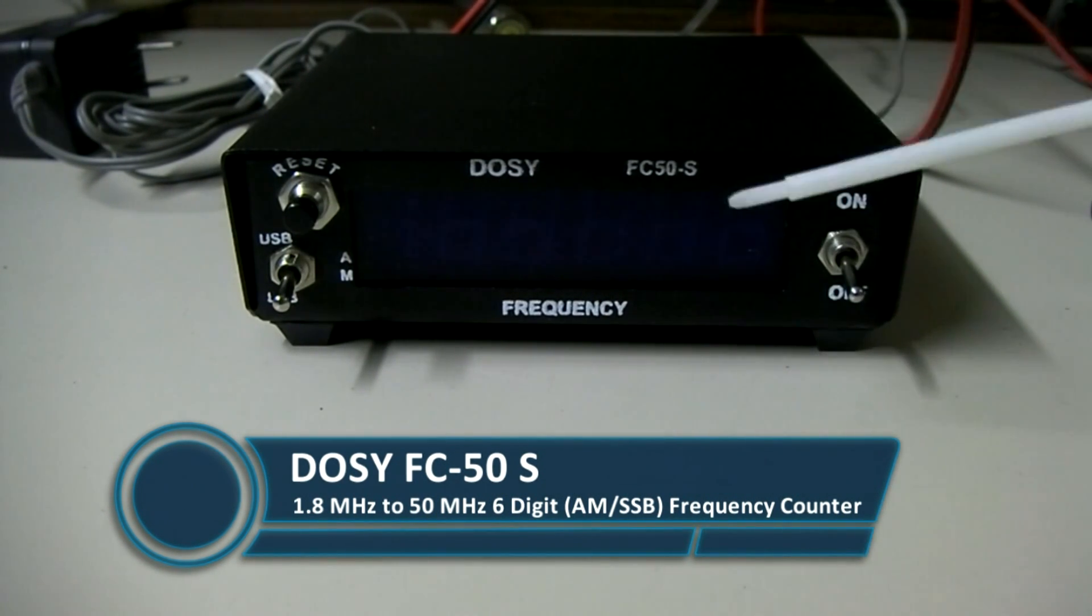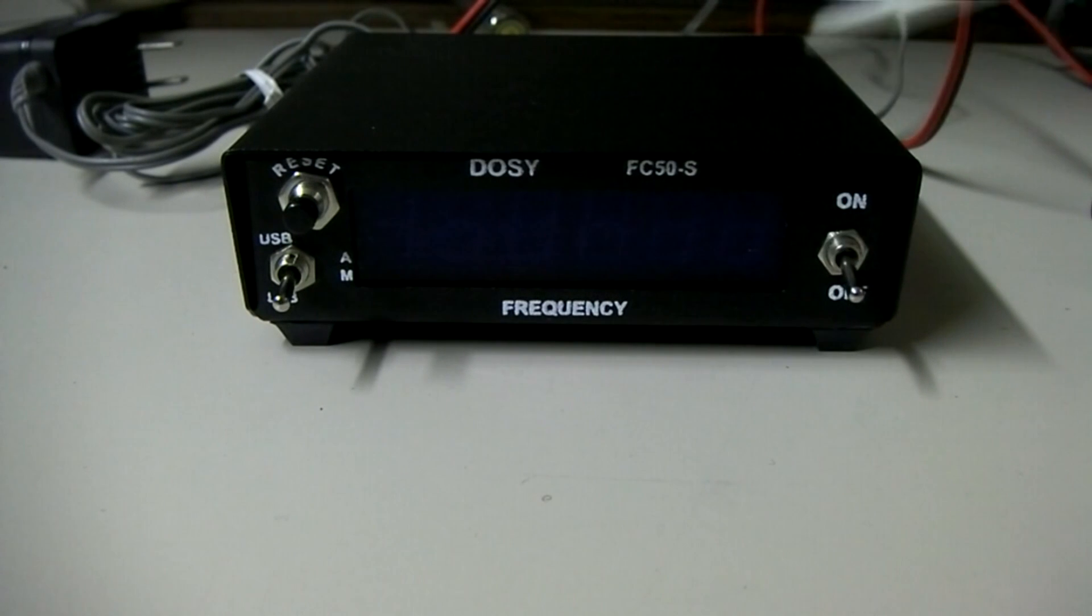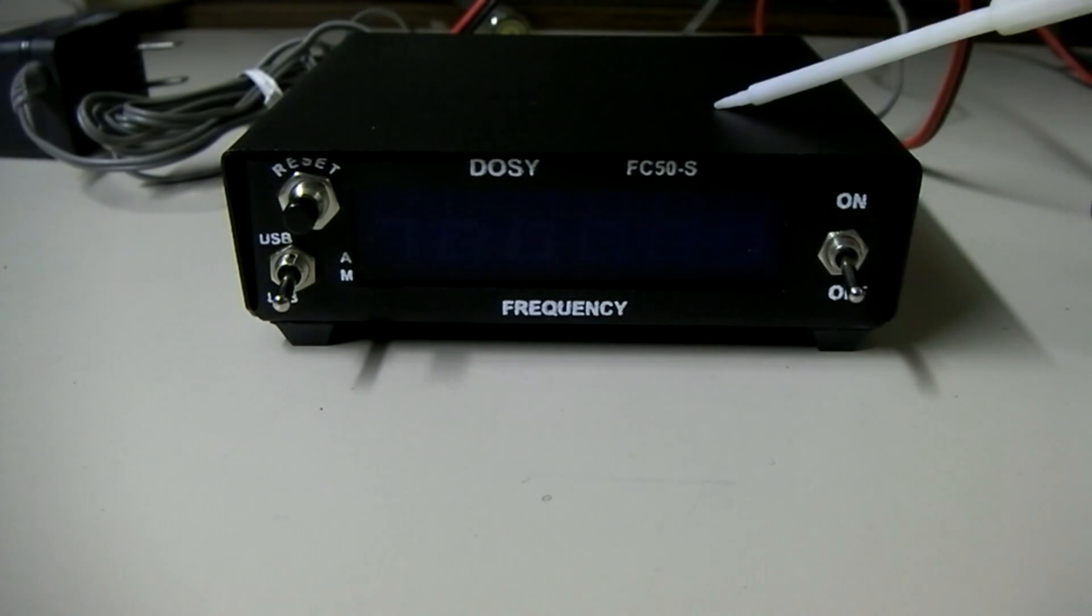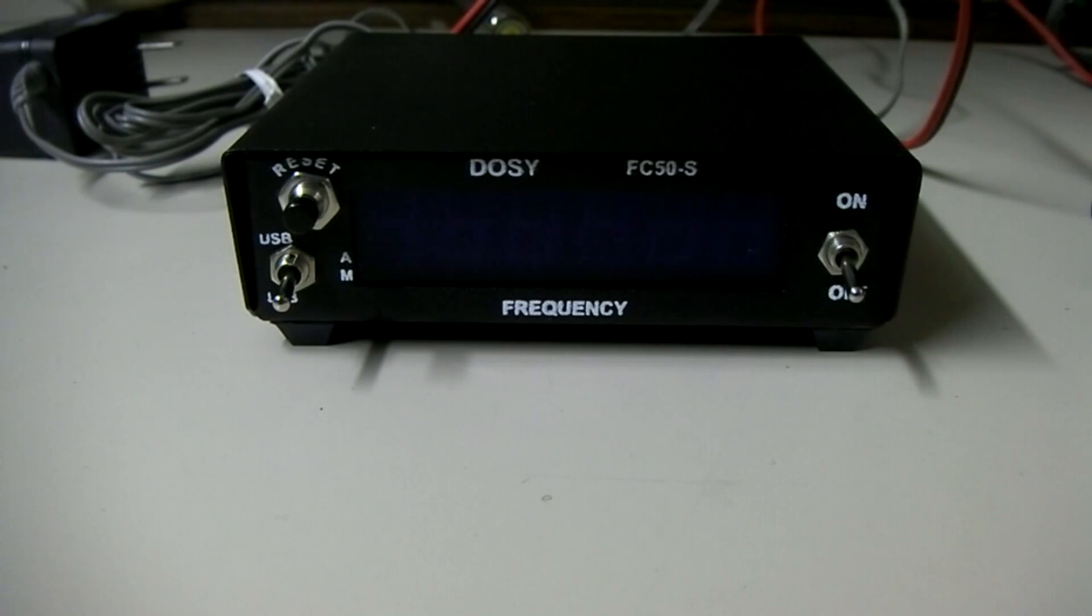This is the FC50S. This is one that can actually read the transmitted frequency from single sideband. It's something a lot of people had always complained about with inline frequency counters—they can't read single sideband frequencies to let you know if you're on frequency on single sideband.